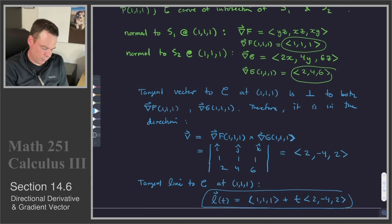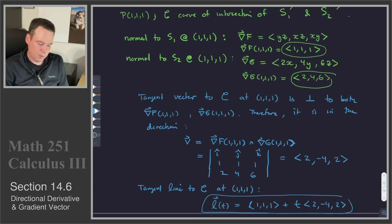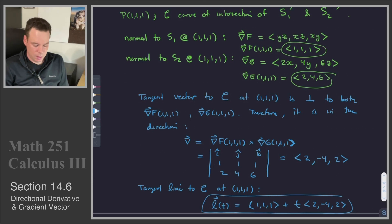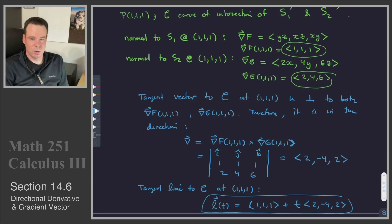Our tangent line L to C at (1, 1, 1) passes through the point (1, 1, 1) and has direction vector (2, negative 4, 2). Notice we found the tangent line to the curve of intersection without actually finding a parametrization for the curve itself. We built the tangent line from the direction vector, which was the cross product of the normals to the two surfaces — normals obtained via gradients, since we were thinking of them as level surfaces.